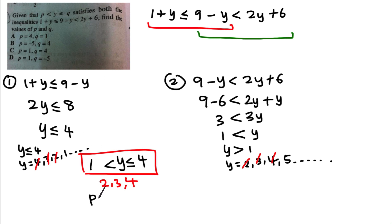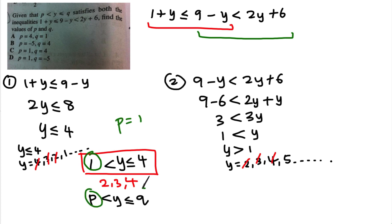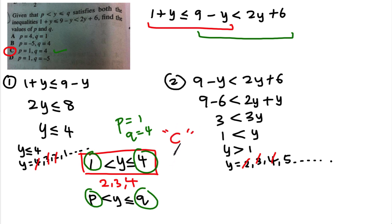After combining, I've formed the pattern: p < y ≤ q. So by comparison, p = 1 and q = 4. By checking the answer choices, the answer will be C.